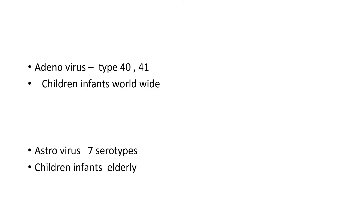Next is adenovirus. Types 40 and 41 are commonly known to affect older children and infants, and it is not confined to one geographical location — it can cause disease worldwide. Astrovirus — the name means star — is a star-shaped virus with around seven serotypes. Apart from affecting children and young babies, it is also known to affect elderly people, where astrovirus commonly causes diarrhea.